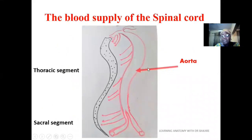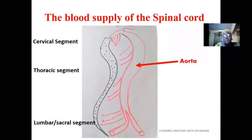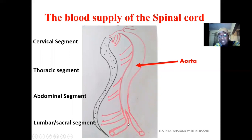The spinal cord is supplied by branches from the aorta depending on where they are located. In the cervical segment, it is supplied by branches from the subclavian. The thoracic segment is supplied by branches from the thoracic aorta, and the abdominal segment is supplied by branches of the abdominal aorta. The lumbar segment is also supplied by branches from the abdominal aorta. For the sacral segment, there is a bifurcation of the aorta distally into the internal and external iliac artery. The internal iliac artery gives branches to the lateral sacral artery, which supplies the sacral region of the spinal cord.